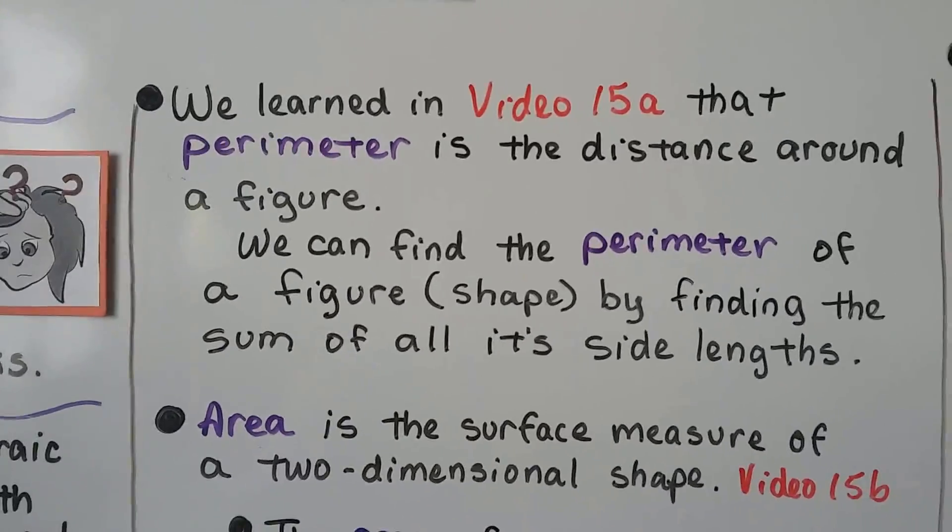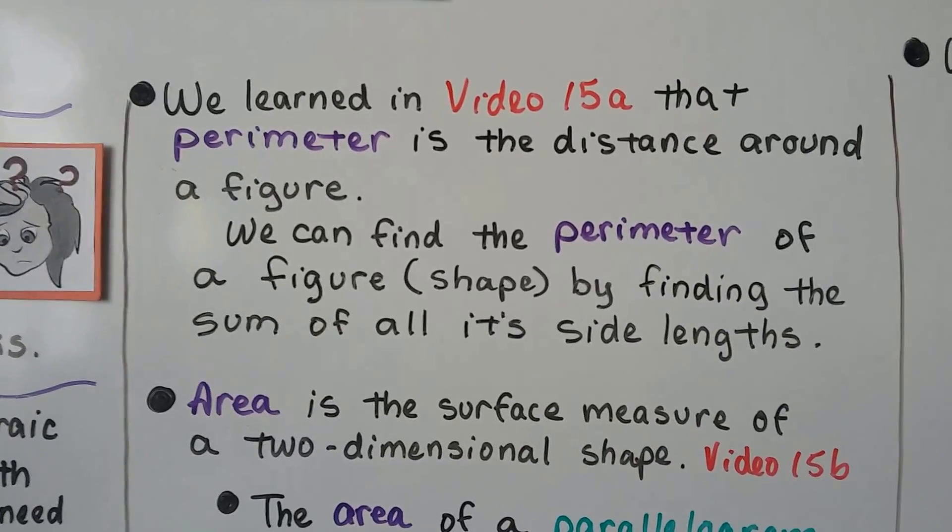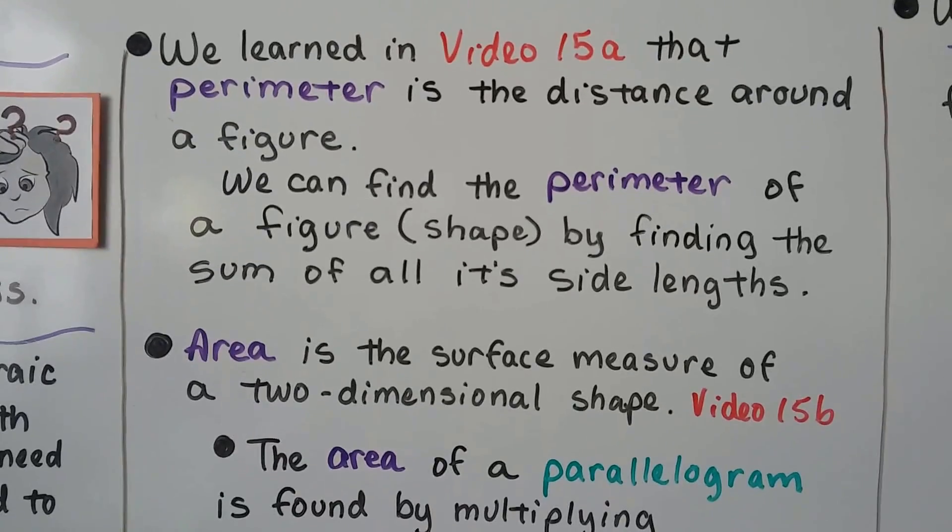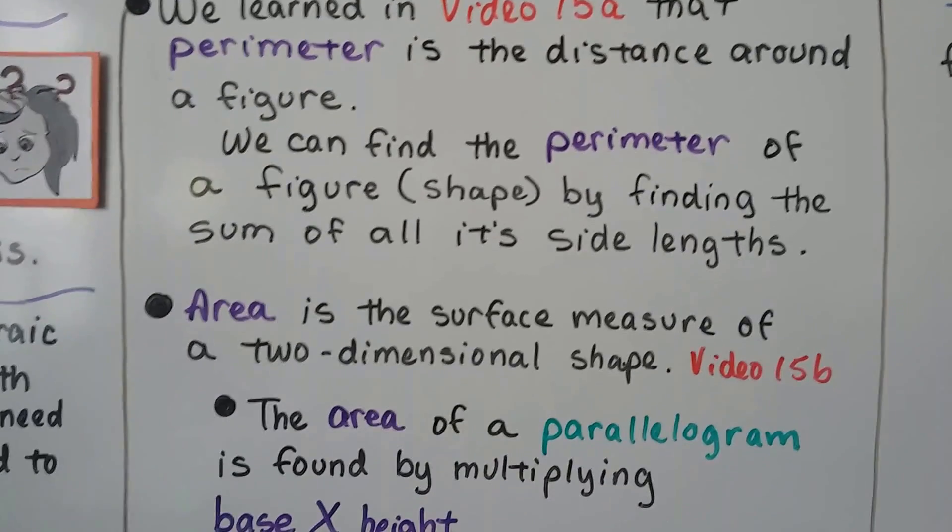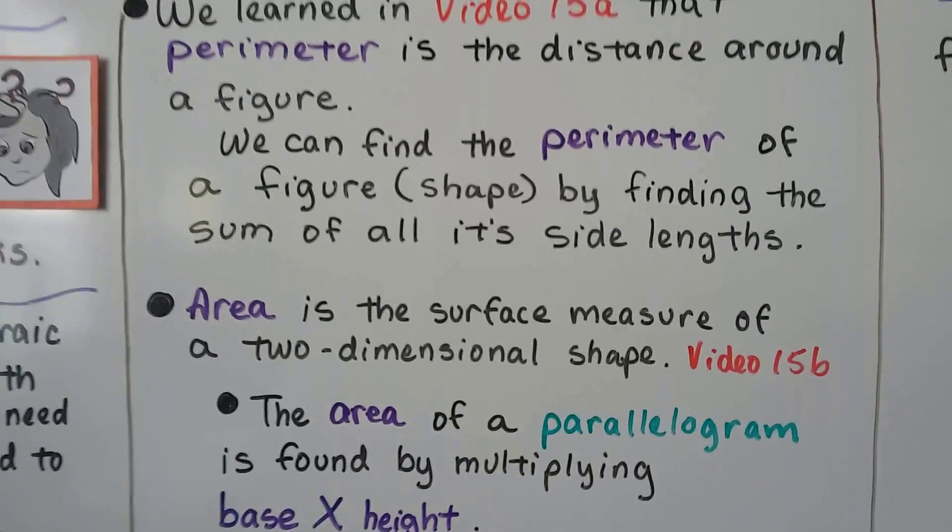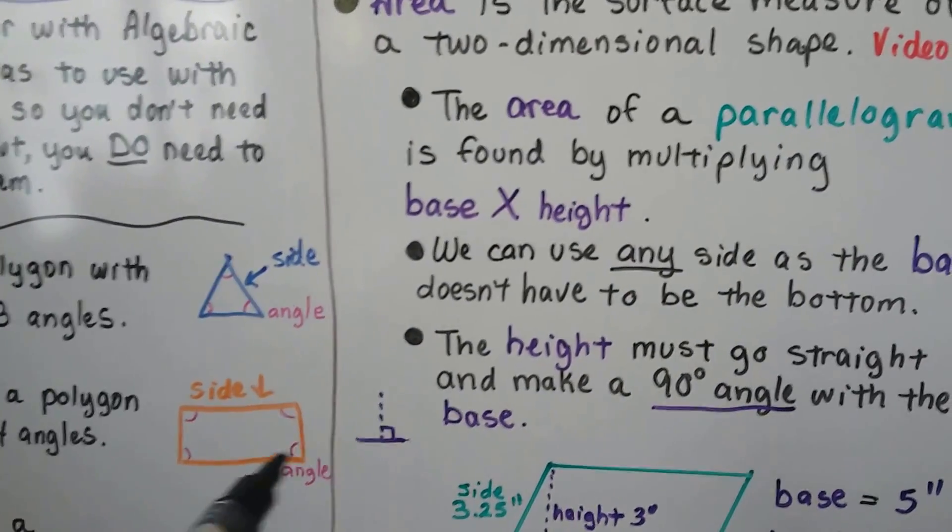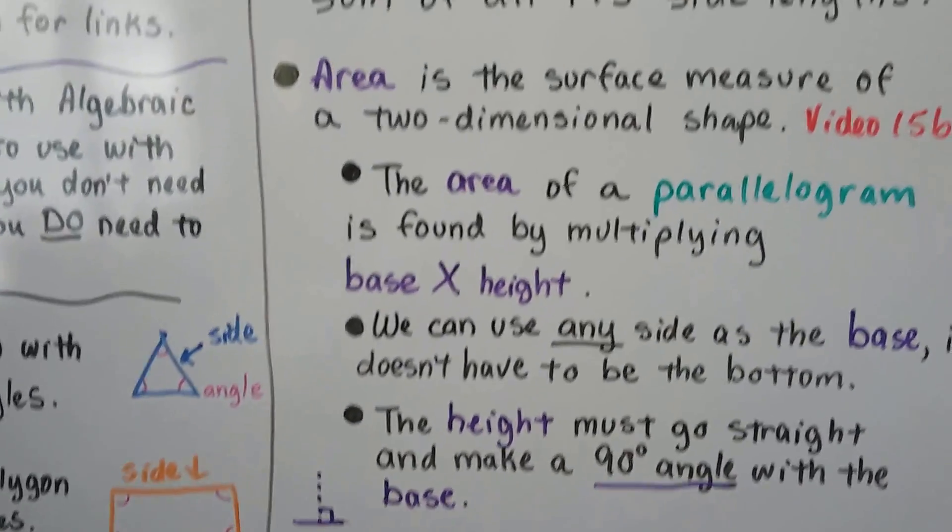We learned in video 15a that perimeter is distance around a figure, like a fence around a yard. We can find the perimeter of a figure or shape by finding the sum of all its side lengths. So you would just take the side length plus the side length plus the side length plus the side length, and that would give you the perimeter.